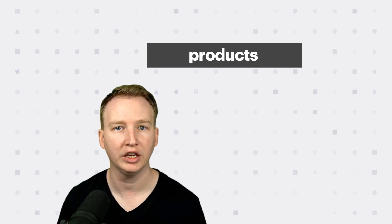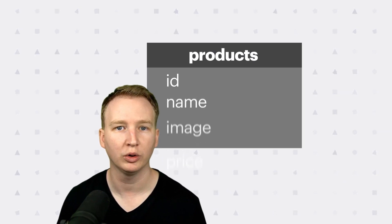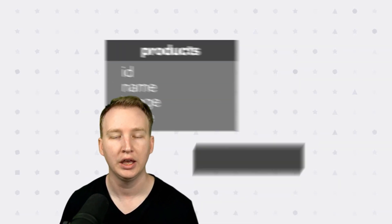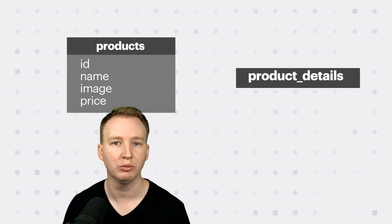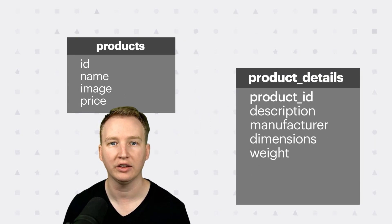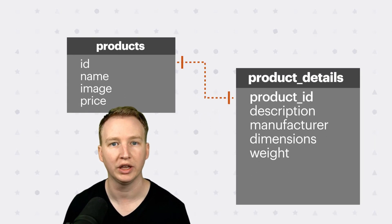In a relational database, you might have a table called products, and each row in the table would contain enough information to populate the list view. Then you'd have another table called product details that contains more information used to populate the detailed view.